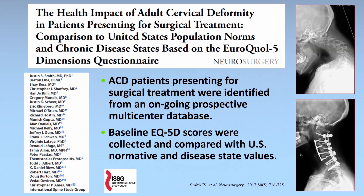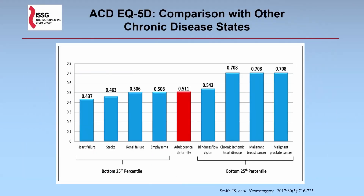We looked at baseline EQ5D scores for patients coming in for surgery and compared these with U.S. normative and other chronic disease state values. We found that adult cervical deformity patients were highly impacted by their disease. Their baseline EQ5D scores were comparable to those of the bottom 25th percentile for heart failure, stroke, renal failure, emphysema, and blindness.